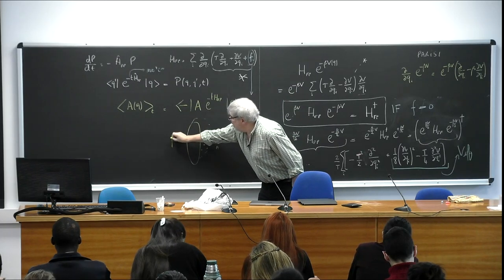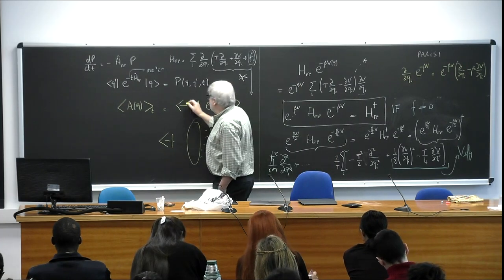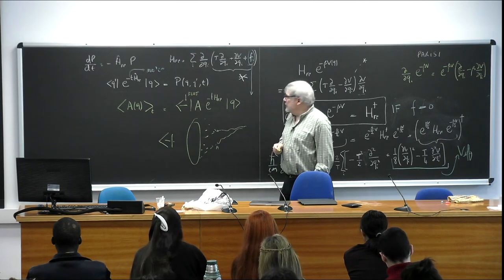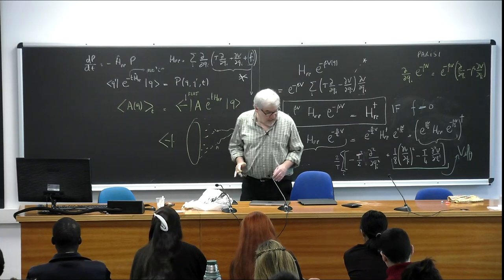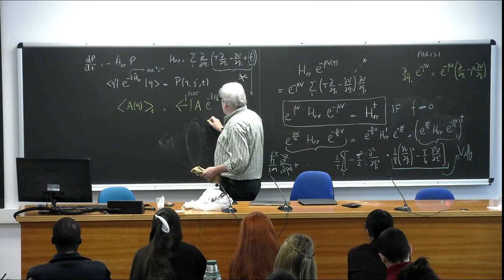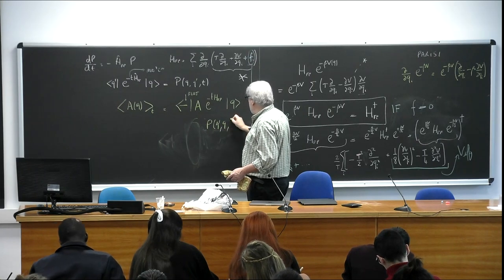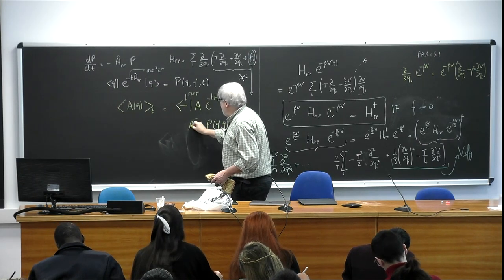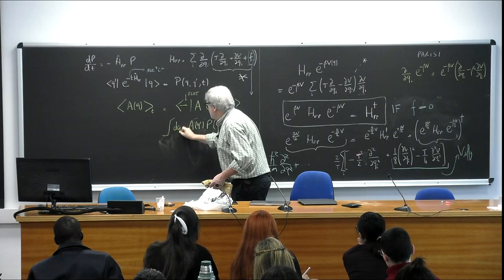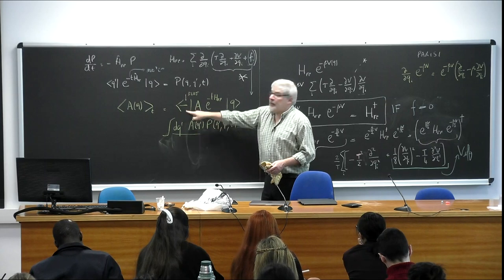This constant says that I am just summing over all final states — this is the flat wave function. In practice, this means: the probability of ending in q prime, having started in q at time t, times A of q prime, integrated over all q primes. Integrating over all q primes is the meaning of that flat final state.